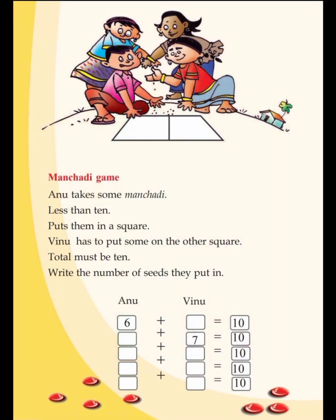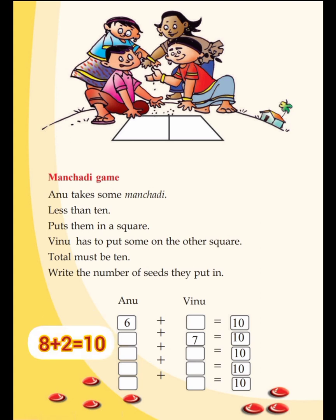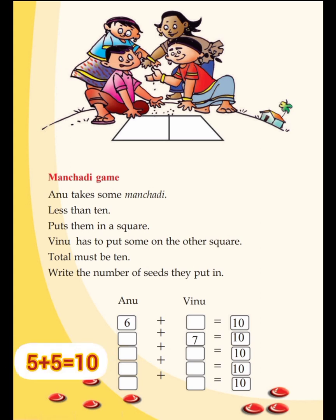We can make ten — like six plus four equals ten. This is from our textbook: the Manchati game. Anu takes some Manchati seeds, less than ten, and puts them in a square. Vinu has to put some on the other square so the total is ten. Write the number of seeds Anu and Vinu put in. For example: six plus four equals ten.